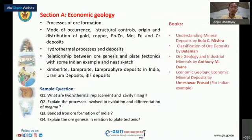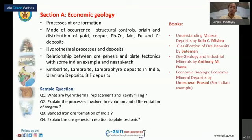In Paper 3, Section A, the first unit is economic geology. Expected questions include processes of ore formation — such as magmatic processes, metasomatism processes, and supergene enrichment — which may appear as short notes or descriptive questions. The next topic is mode of occurrence, structural control, origin, and distribution of minerals.